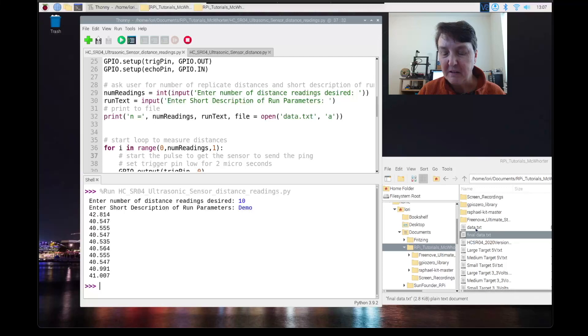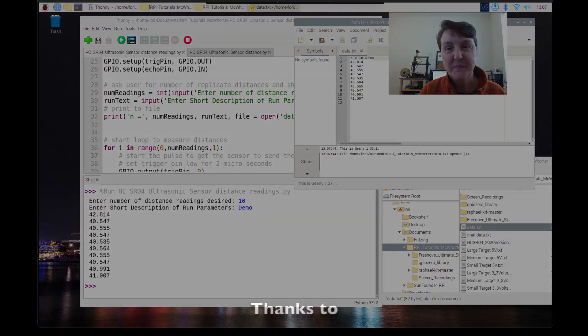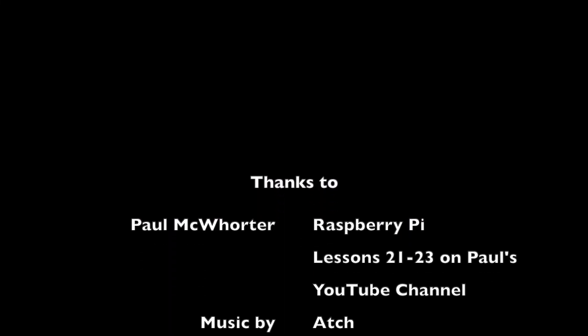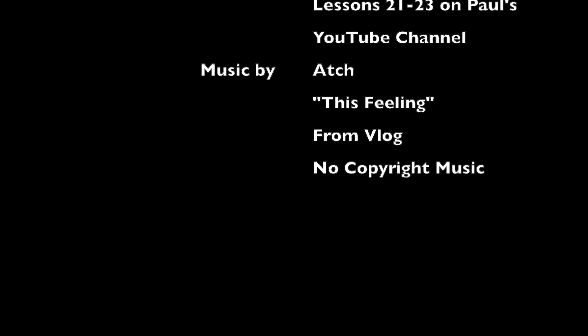We'll also see that a data.txt file appeared here in the directory. I'll just double click that open. There you can see what the data file looks like. It has a little comment here how many we asked for and then the text that we entered as the description and then our 10 numbers. That's how that works. And there you go.